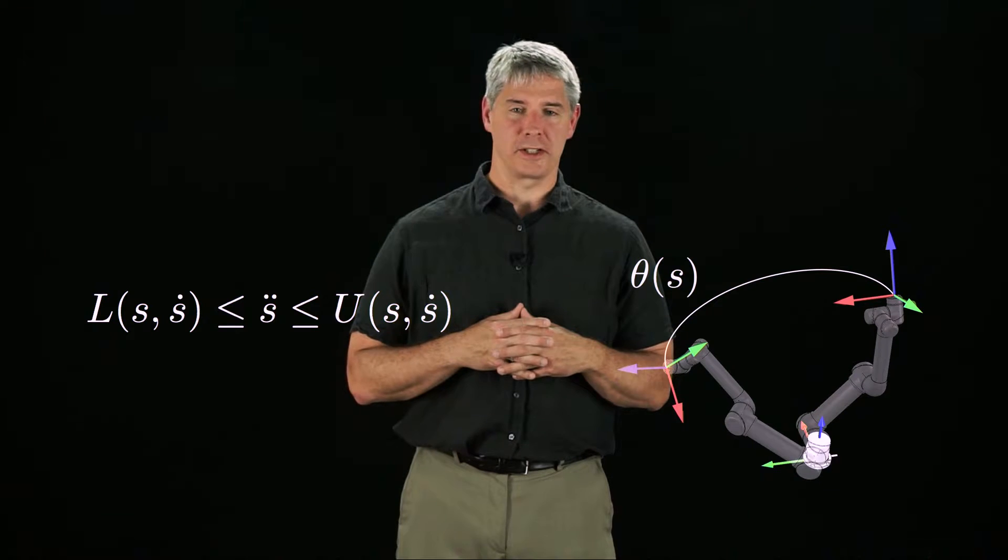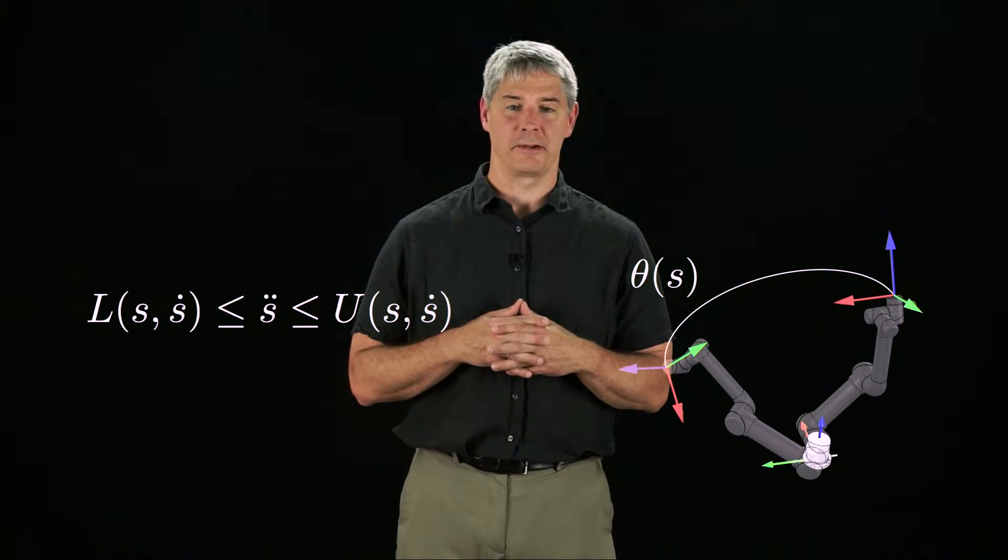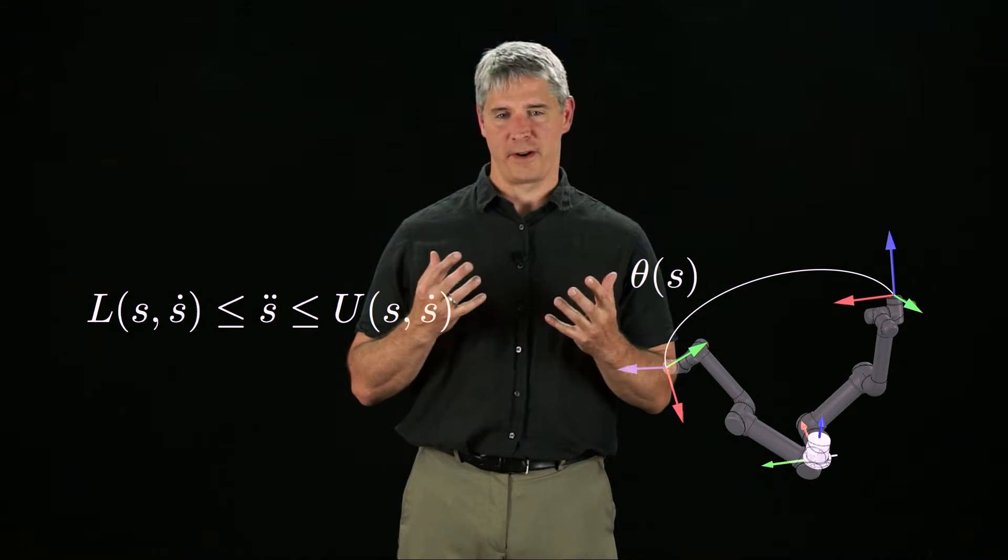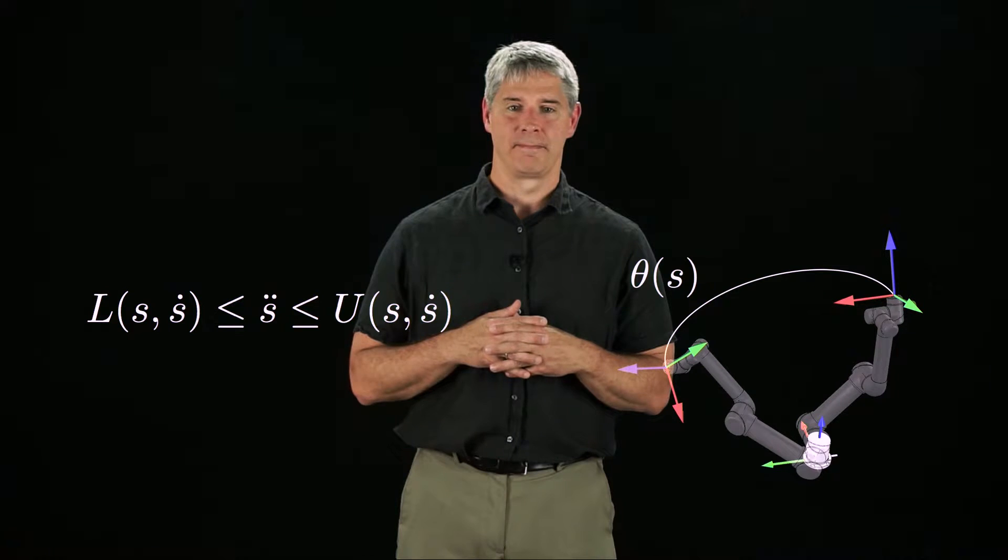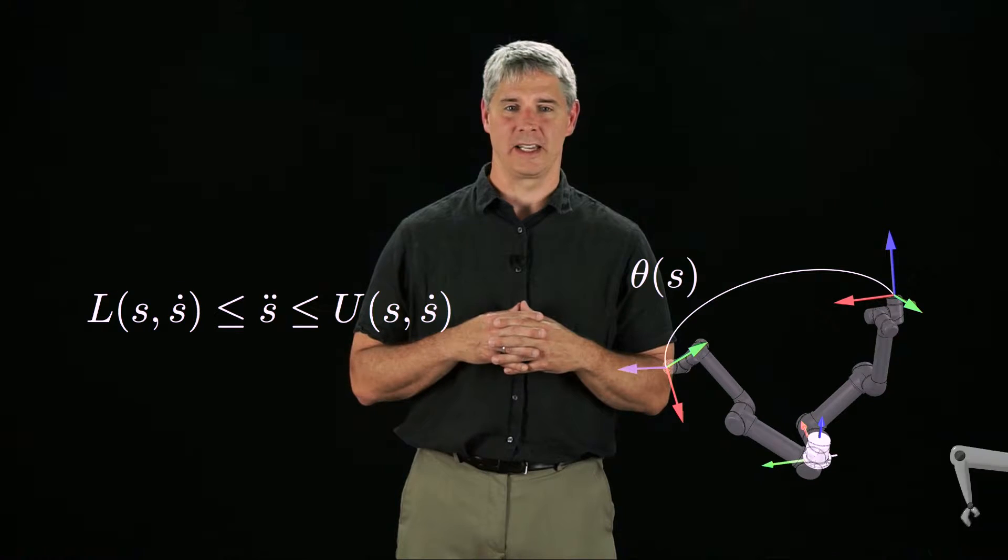In the last video, we learned to express the robot's joint force and torque limits as constraints on the feasible accelerations s double dot along the path theta of s as a function of the state s, s dot. In this video, we'll express those constraints graphically and gain some insight into the time-optimal time-scaling problem.